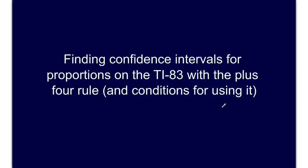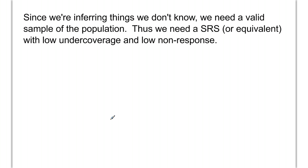We're going to find confidence intervals for proportions using our calculators and a handy little technique called the plus-4 rule. First, we need to make sure we have all our conditions met. The first condition is having the right type of sampling method. The SRS is the gold standard — the magic ticket to a good sampling method. You could, however, use a systematic sample or a properly balanced stratified random sample, and both get you the same basic effect.